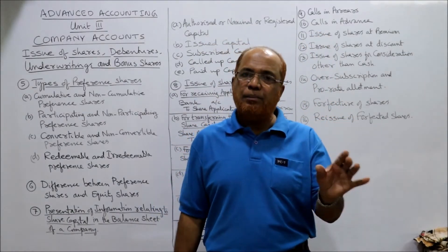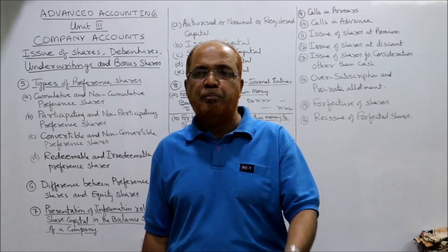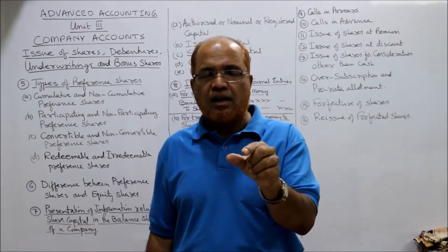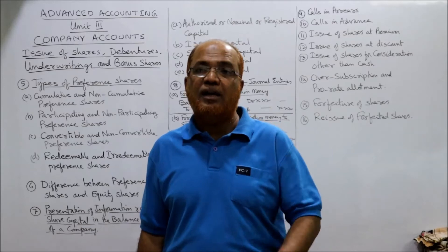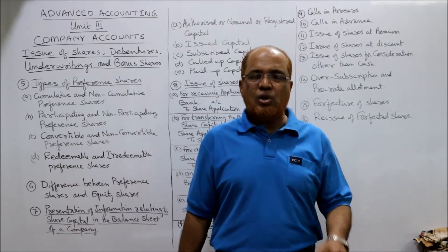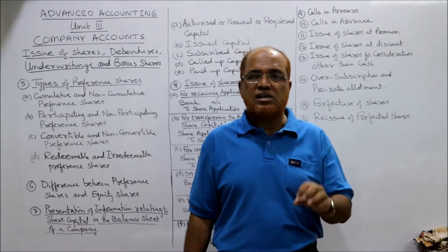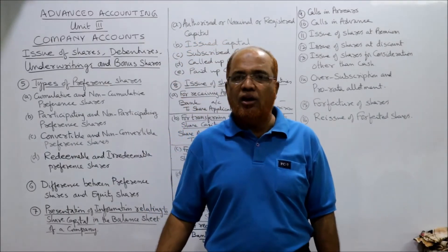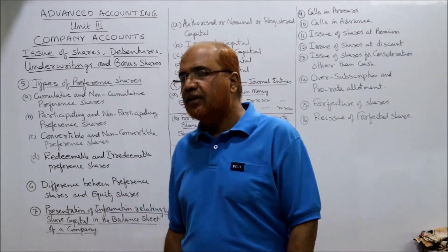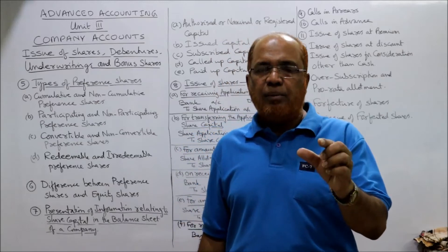Third: convertible and non-convertible preference shares. As the name suggests, convertible preference shares can be converted into equity shares after a specified period of time. For example, at the time of issue the company may declare that these shares can be converted into equity shares after a period of five years. Non-convertible preference shares cannot be converted into equity shares throughout their entire life.